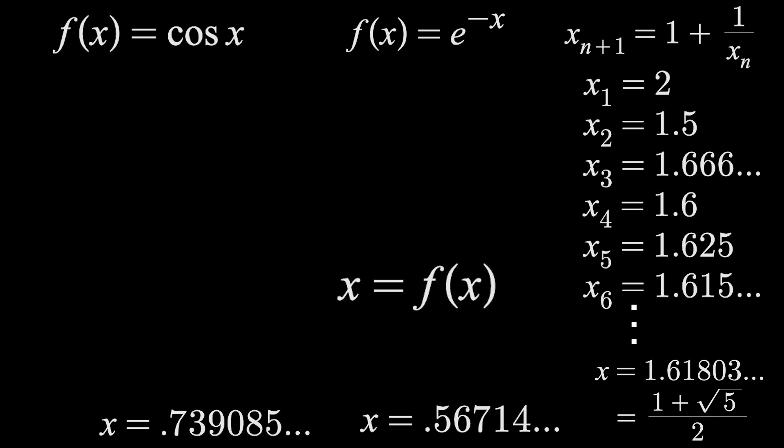The formula f of x_n equals x_n plus 1, what we were just doing, is known as the fixed point iteration. And if it converges, then it does so to the point where the function leaves the input unchanged. Cosine of .739 and so on is that same thing.